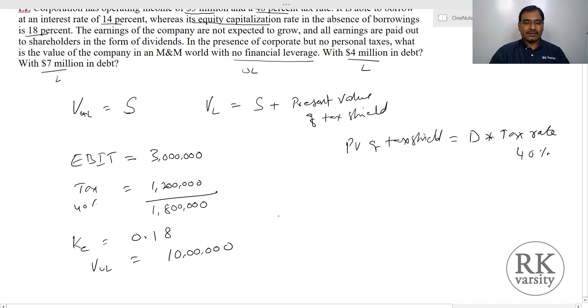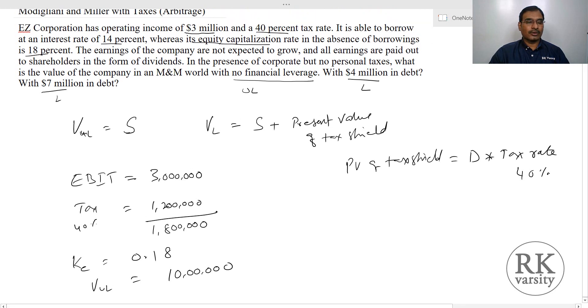Now in the case of a levered firm, you have two options. One is when you borrow $4 million of debt and second one is when a company borrows $7 million in debt. Value of levered firm equals market value of equity plus present value of tax shield, that is debt times tax rate.